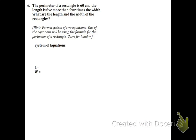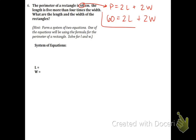Here comes the perimeter problem — there was one just like this in your Math Excel assignment. We must know the formula for the perimeter of a rectangle: p equals 2l plus 2w. But instead of writing the p, we're going to write 60, because they told us that's what it equals. So 60 equals 2l plus 2w — that's our first equation. The next equation deals with the next sentence: length is 5 more than 4 times the width.